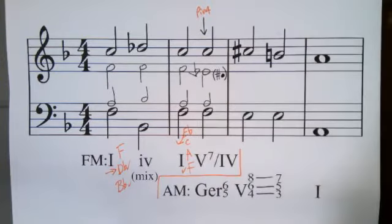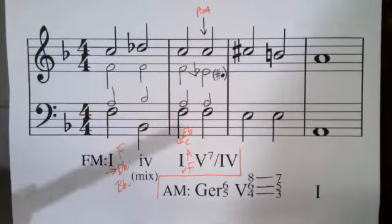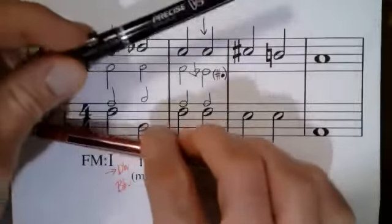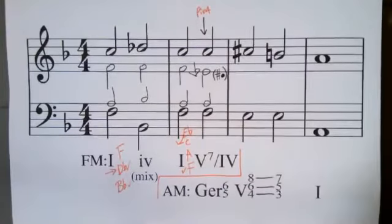So let's remember our rules for resolving the augmented sixth. The rules are you find lowered scale degree six and raised scale degree four. In other words, the two notes that form an augmented sixth, and make sure that they're resolved by semitone in contrary motion to scale degree five.